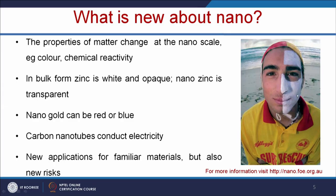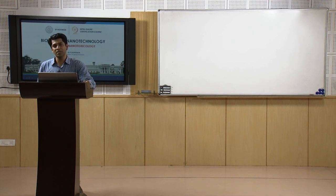In cricket, Australian players mostly apply this kind of sunscreen. This bulk form of zinc is white and opaque, but the same sunscreen in nano zinc form is transparent. When the material goes to nanoscale, the properties of the material get changed. Nano gold can be red and blue, and carbon nanotubes can conduct electricity. New applications arise for familiar materials, but also new risks — inert materials used day-to-day when going to nanoscale may have different properties and new risks.